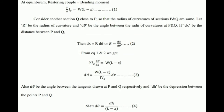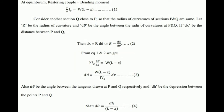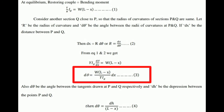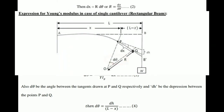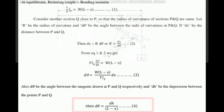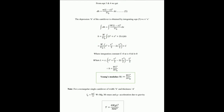Using Equation 1 and Equation 2, we get: Y × Ig × (dθ/dx) = W(L − x). Solving this gives Equation 3: dθ = W(L − x) / (Y × Ig) × dx. Also, dθ is the angle between the tangents drawn at P and Q respectively, and dh is the depression between points P and Q, so we can write Equation 4: dθ = dh / (L − x).